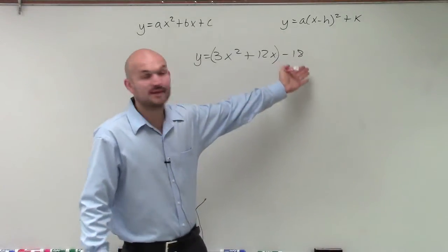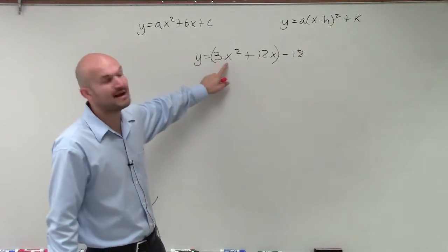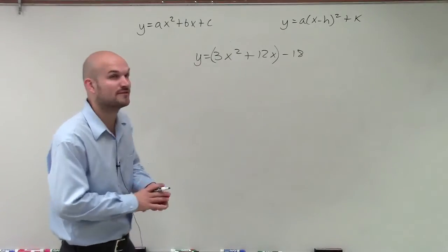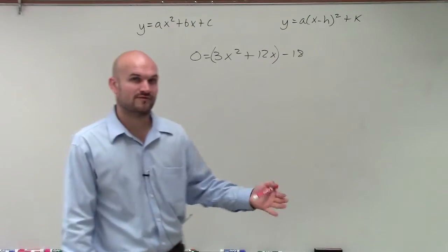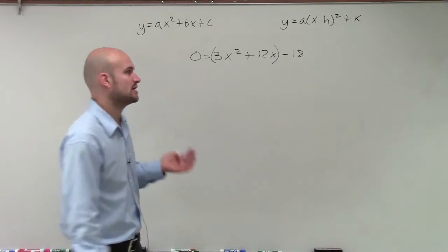And we notice that 18 is not a perfect square, and plus we have my a as 1, so we're not going to be able to create our perfect square that we're looking for. So I'm going to set this equal to 0 because we're going to try to solve. And now what we need to do is we need to create a perfect square trinomial.